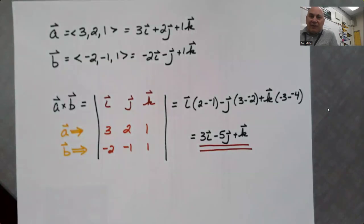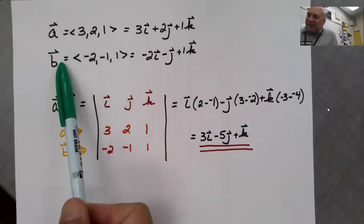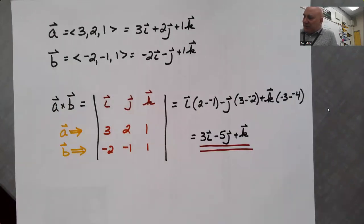Let's confirm it's perpendicular to B. Negative six, plus five is negative one, plus one is zero. So, sure enough, this vector is perpendicular to both of these, and hence, it's perpendicular to the plane that contains both of them. So, that's how you find the cross product of vectors.